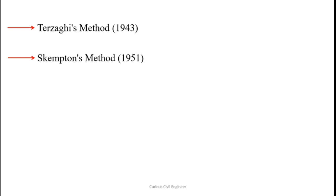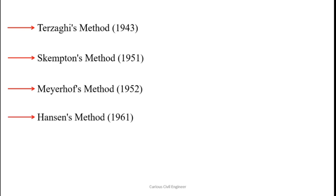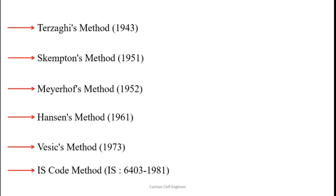Skempton modified a little bit of Terzaghi's work. After that, Meyerhoff came in 1952 and gave his own corrections. Hansen came in 1961. Then Vesic in 1973. And our own IS code method is also there, which we have been using since 1981.